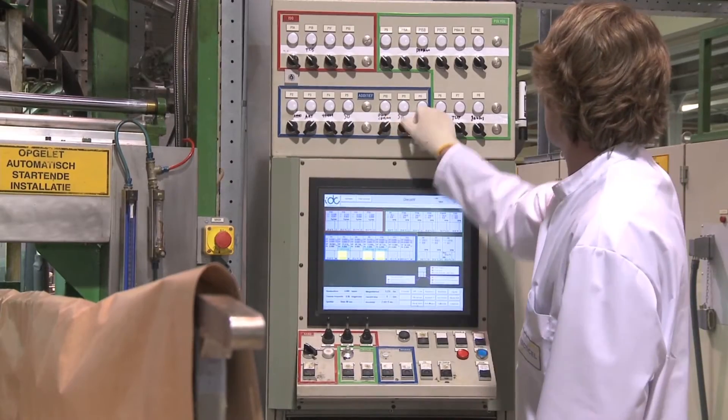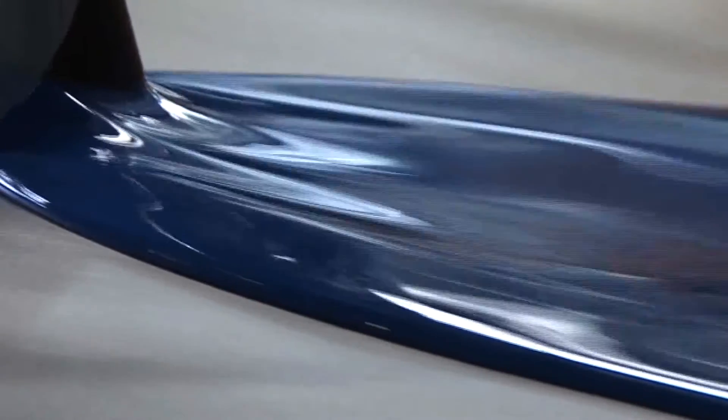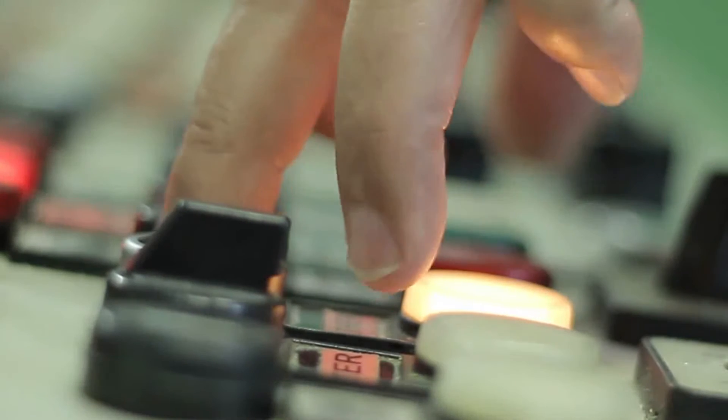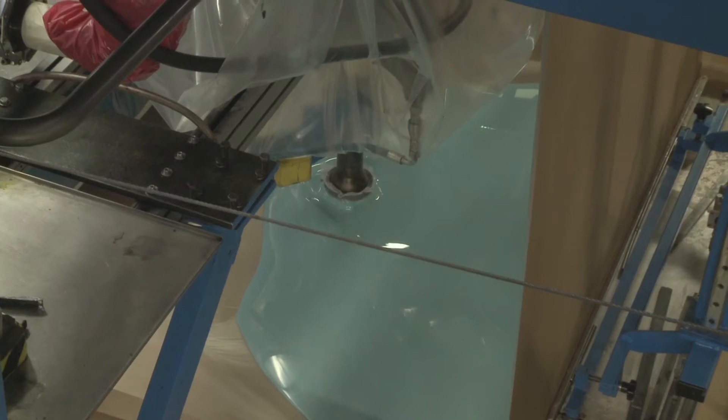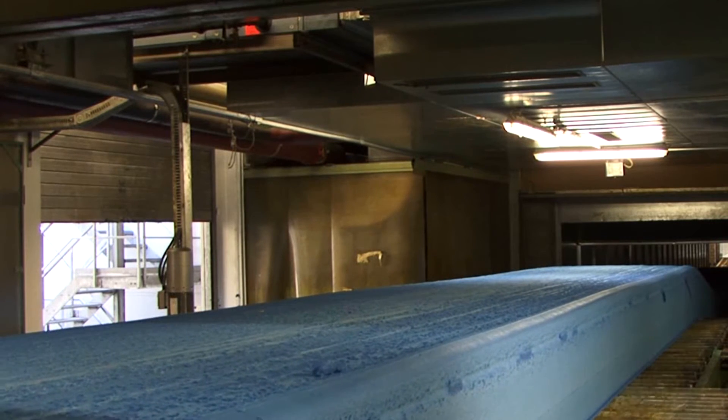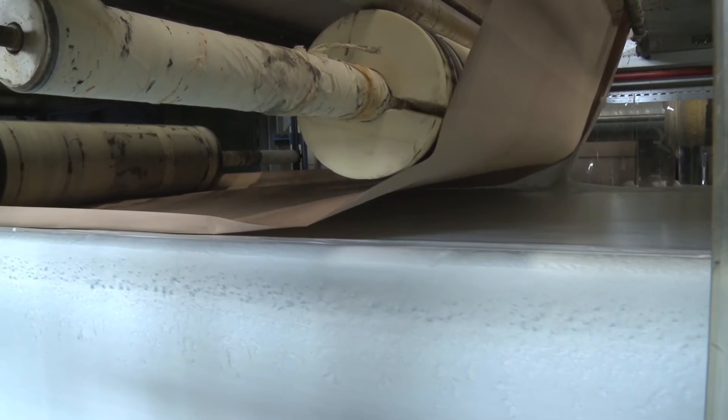The mixing head is where the real production process begins. Isocyanates, polyols, pigments and other additives are mixed together in the mixing head. This is poured onto a rolling conveyor belt where it starts to foam. It forms a foam block along the conveyor belt.